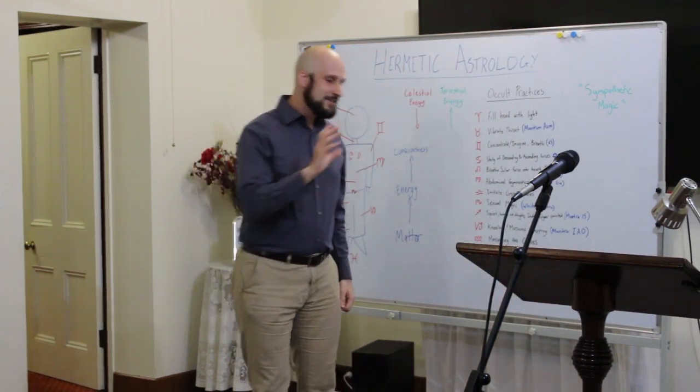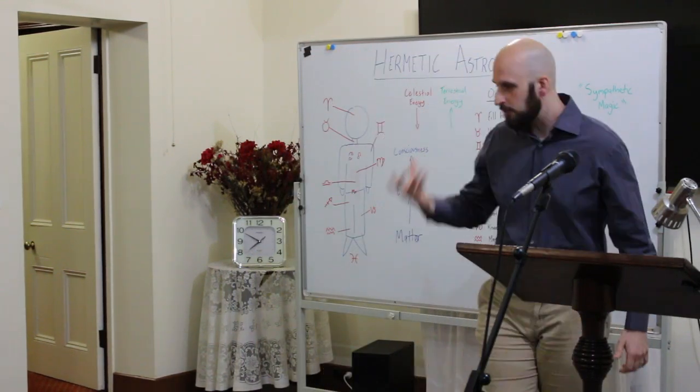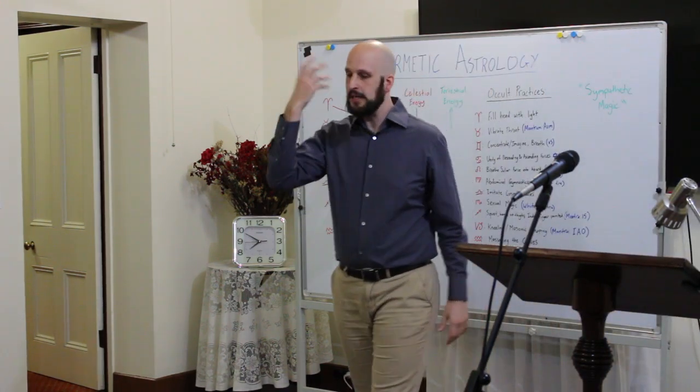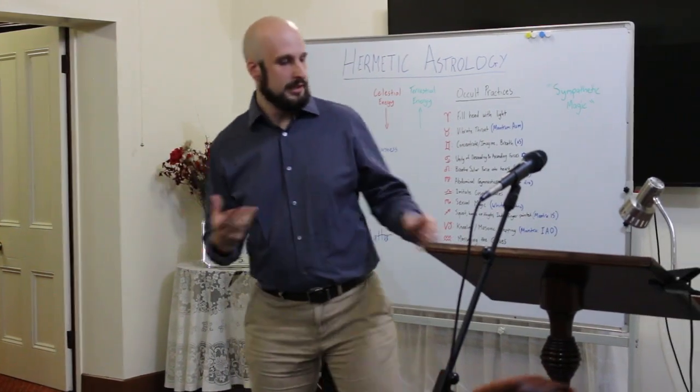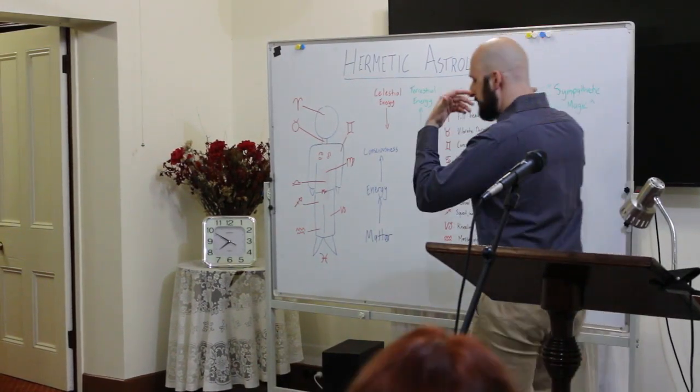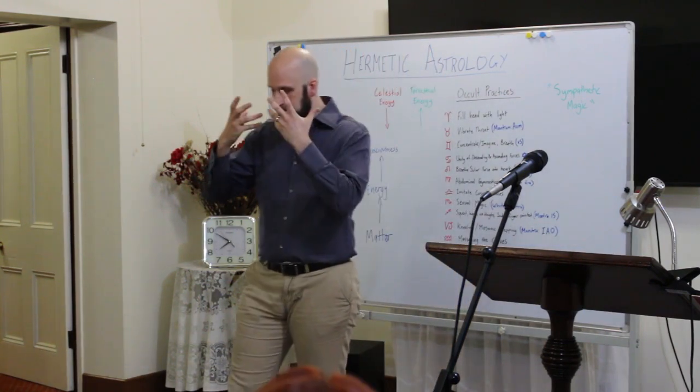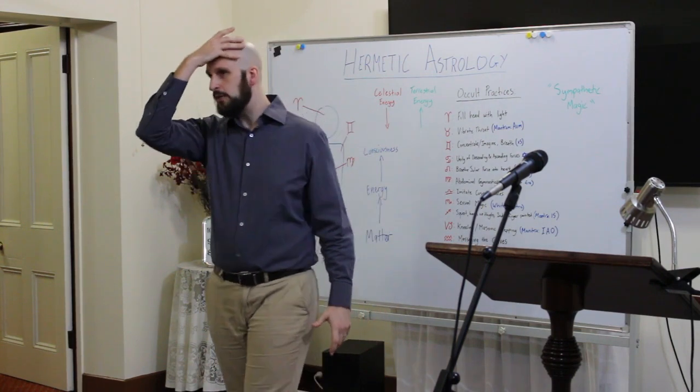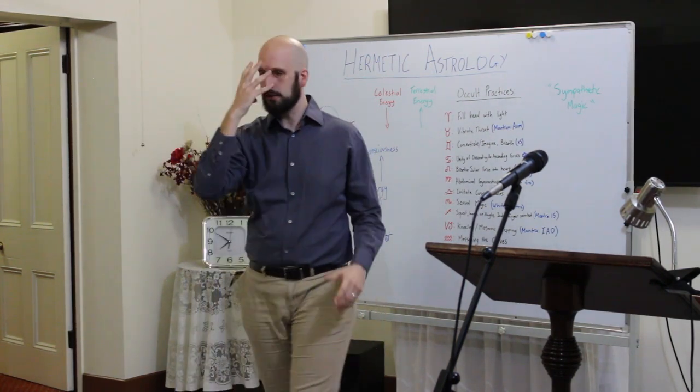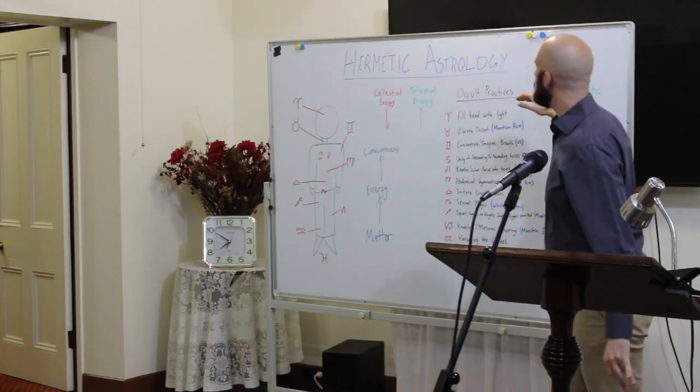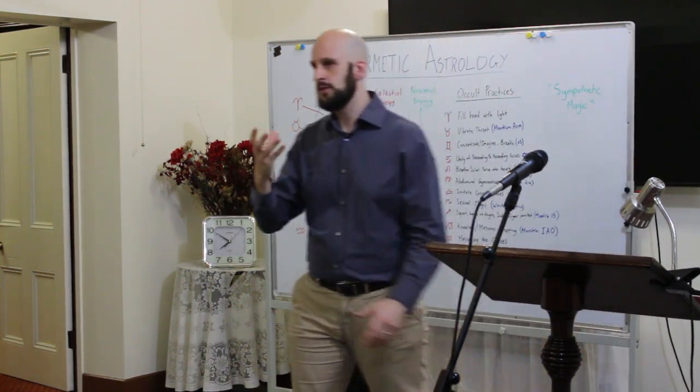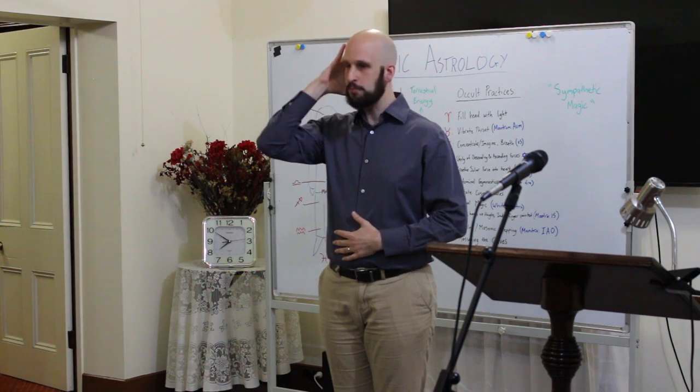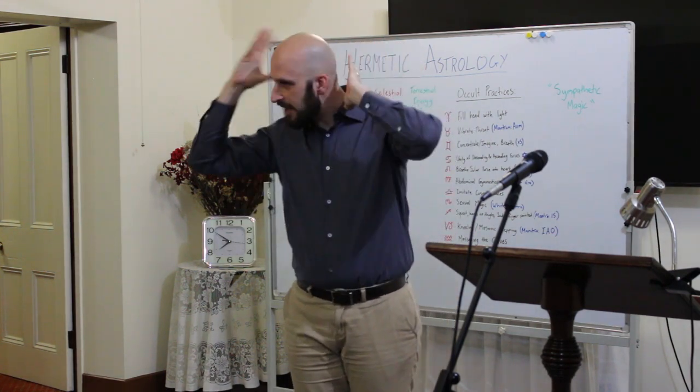Without further ado, what are these practices? We begin in Aries. In the beginning of Aries, some of these practices are quite simple. It begins as merely a visualization practice. You sit down and imagine the white light, the celestial force, coming down into your cranium. Crumheller mentions using head nods - you nod the head seven times. You nod the head seven times forward while imagining that white light filling up every single corner of the cranium.